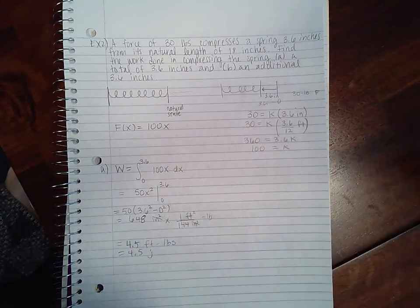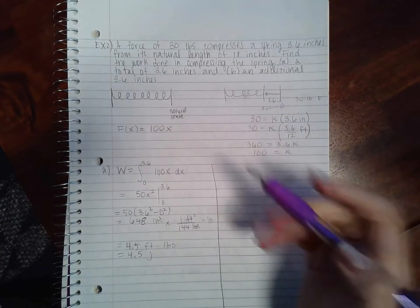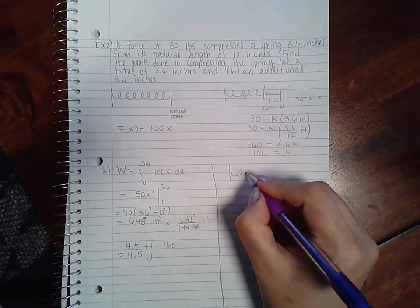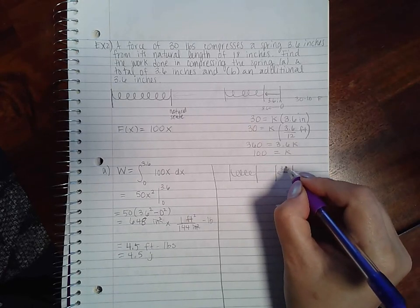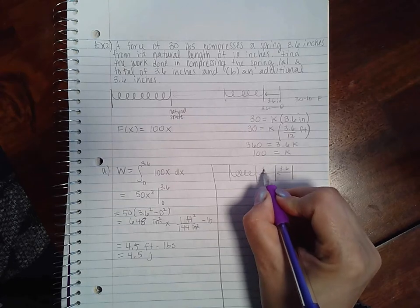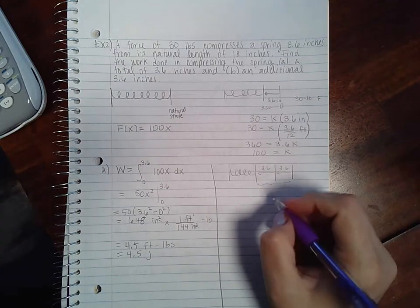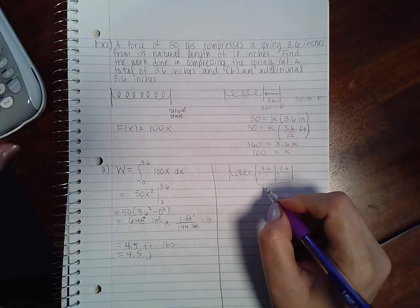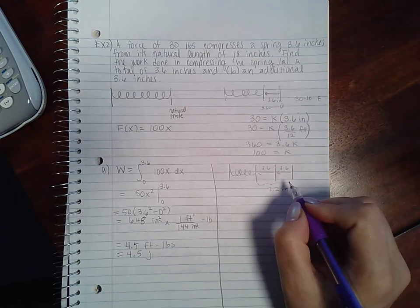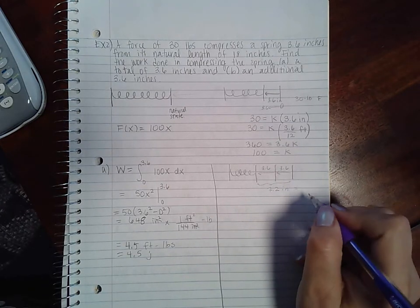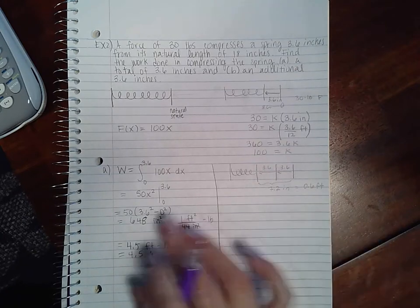Now let's look at part b. Part b is a little bit different. Part b is not just moving it that 3.6. Part b is taking the 3.6 that it already moved and then moving it an additional 3.6, which means how much have you compressed it all together? You've compressed it 7.2 inches. Well, what is that in feet? 7.2 divided by 12 is actually 0.6 feet. And so I'd rather do the conversion here than to try to do it later with this ugly fraction and all of that.